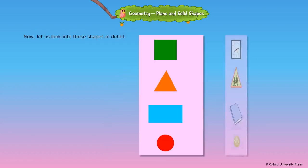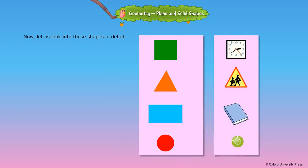Now let us look into these shapes in detail. Square: it has 4 sides and 4 corners. All the sides are of equal length. This clock looks like a square.